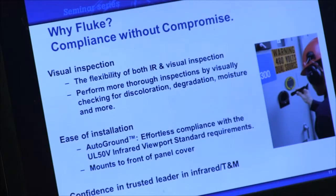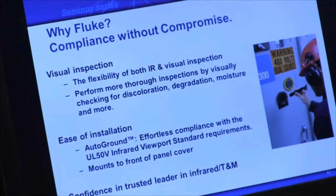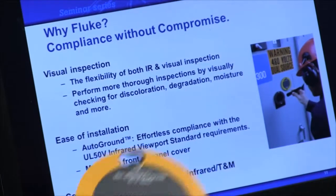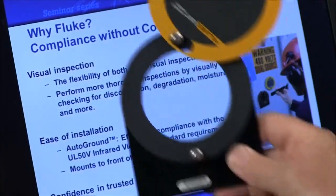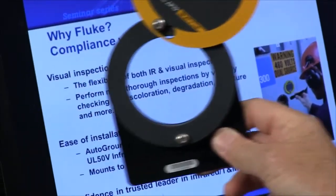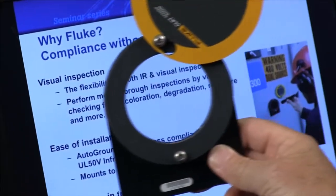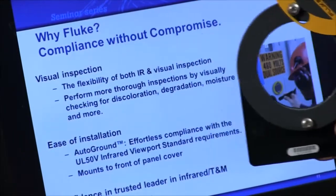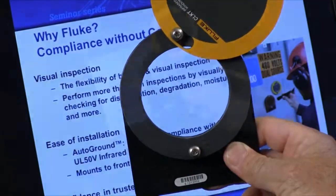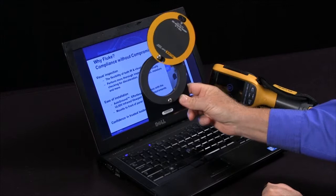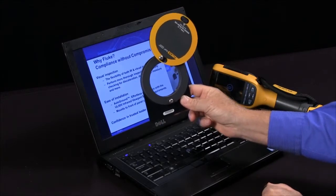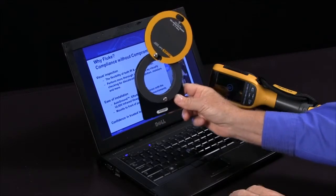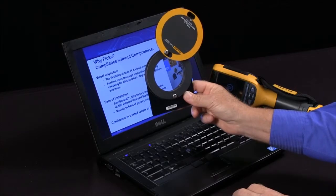And one thing to consider is Fluke gives you compliance without compromise. These have been tested to the latest IR standards, and one of the nice things about Fluke windows is you can also see through them visually. A lot of other windows will not give you this visual component, so you can look inside and actually see if things are starting to melt where you not only have to use your IR imager to determine that.